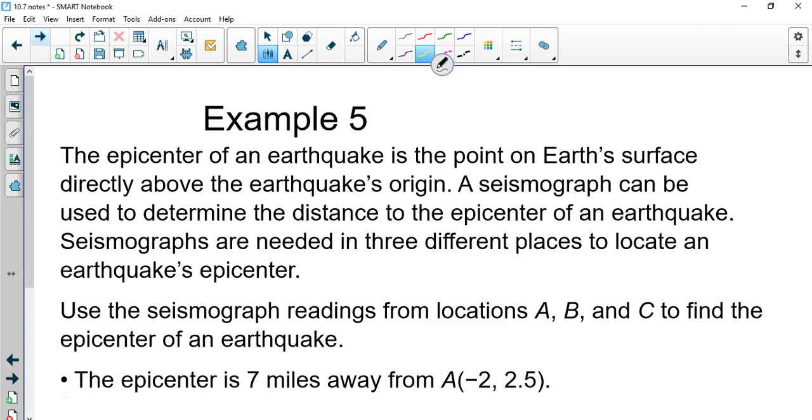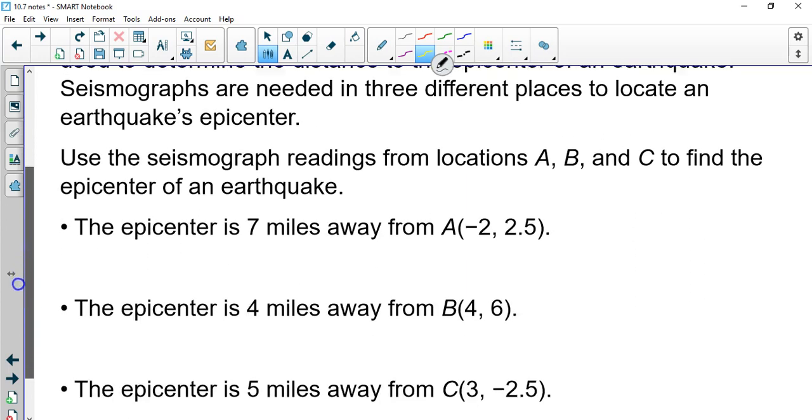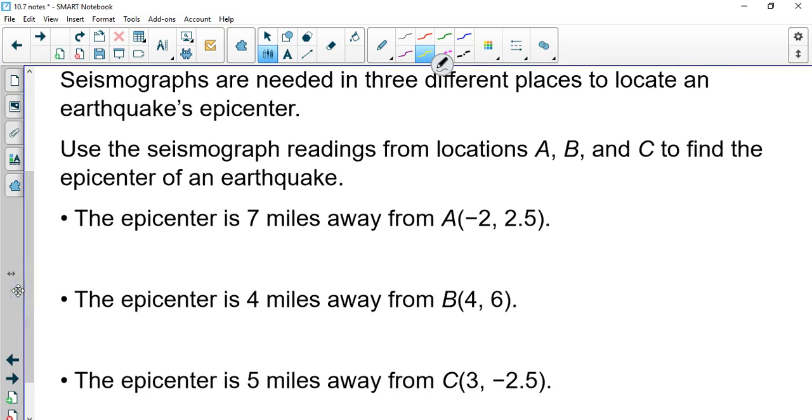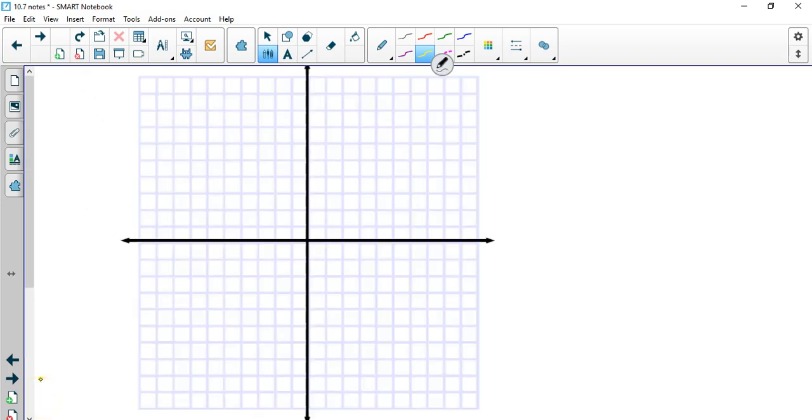Okay, last example. The epicenter of an earthquake is the point on Earth's surface directly above the earthquake's origin. A seismograph can be used to determine the distance to the epicenter. Seismographs are needed in three different places to locate the earthquake's epicenter. Use the seismograph readings from locations A, B, and C to find the epicenter of the earthquake. So this one, you actually would need graph paper to be exact with this.